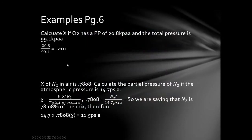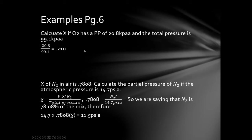Here are a couple more examples. Calculate chi, the mole fraction of oxygen, if it has a partial pressure of 20.8 kPa — just like in air — and the total pressure is 99.1 kPa. Using our formula: 20.8 divided by 99.1 equals 0.21, so 21% is chi. Pretty straightforward.